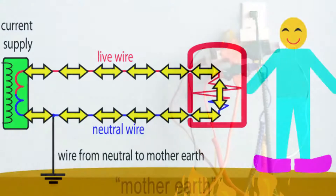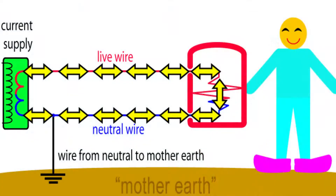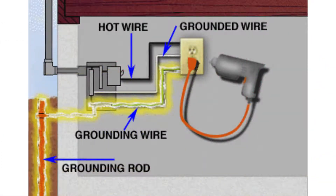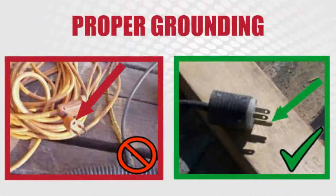Grounding hazards are some of the most frequently violated OSHA electrical standards. Grounding is a physical connection to the earth, which is at zero volts. Grounding ensures that metal parts of an electrical wiring system are at zero volts relative to ground.